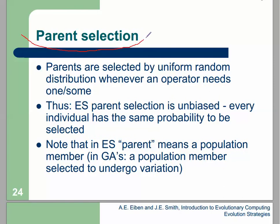Another part of ES is parent selection — it is not very important. Parent selection is the same as in other evolutionary algorithms such as GA. In ES we use uniform random selection to select parents, then combine or crossover, then mutate to generate new children or offspring. Parent selection is not important and it is random.